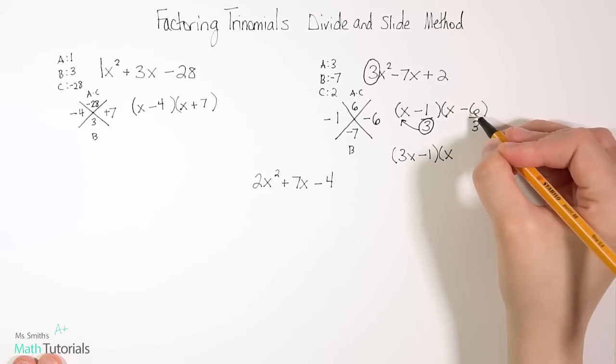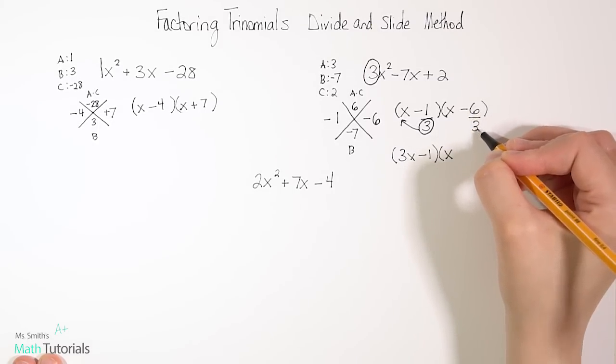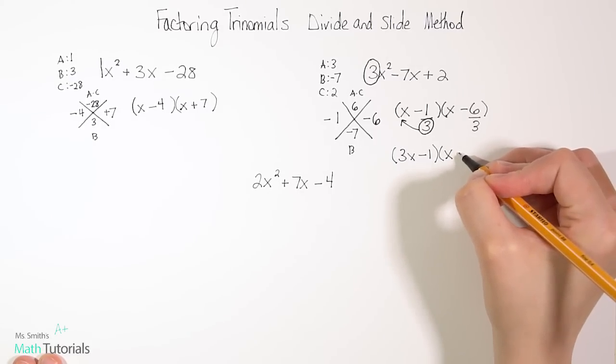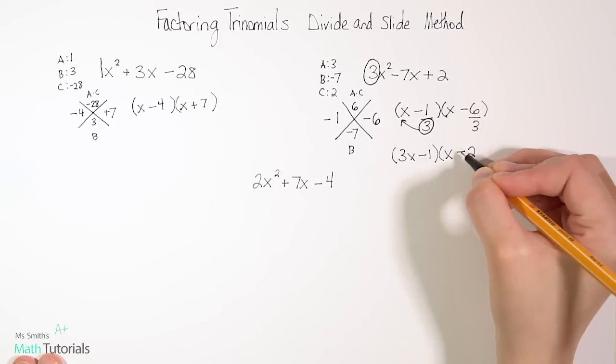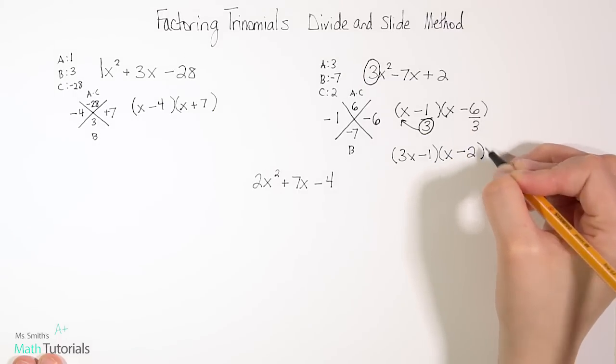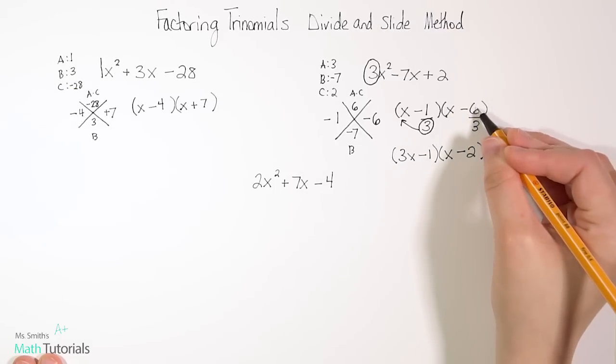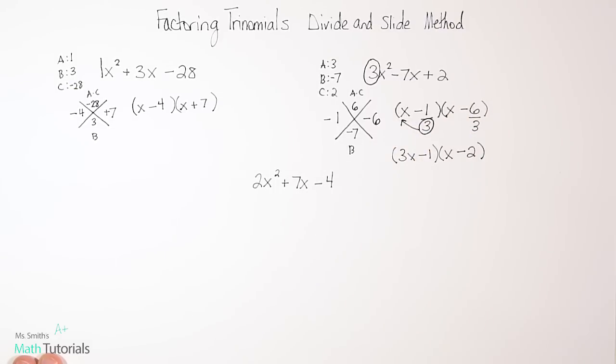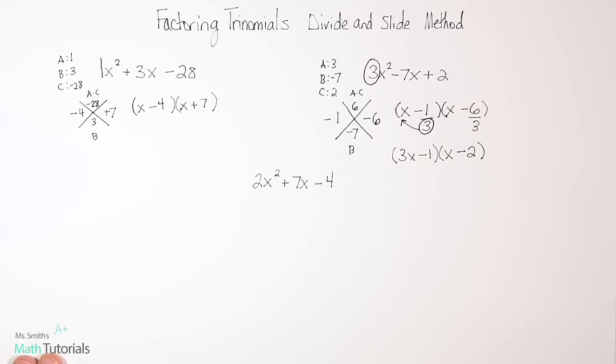Now when we get to the next binomial, so now I've still got my x. But notice here, I've got a negative 6 divided by 3. Well, that definitely reduces to a whole number. So we would rewrite that as negative 2. Isn't negative 6 divided by 3 negative 2? So there's no need to slide. We were able to divide. So you either divide or you slide. It's one of the two. And then this would be your final answer. Pretty easy, right?